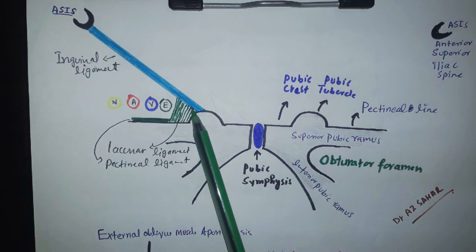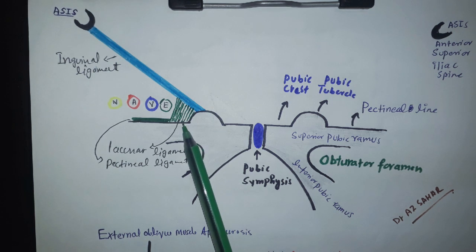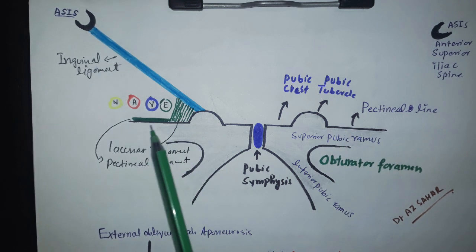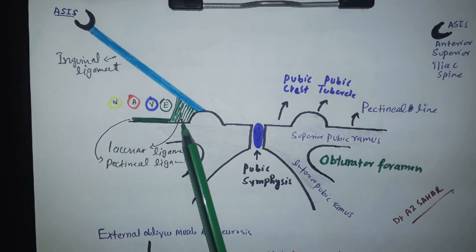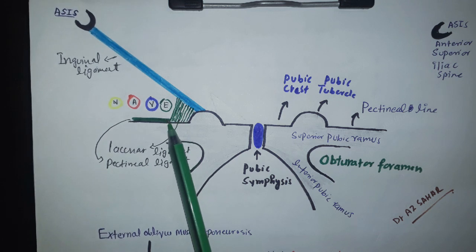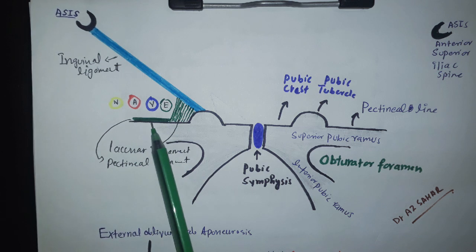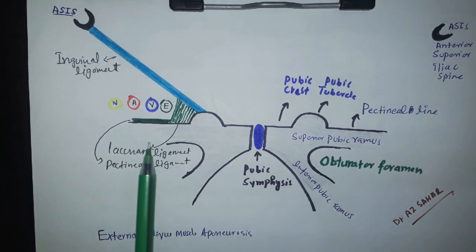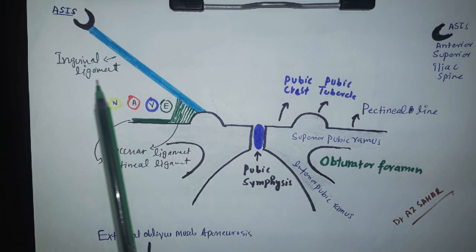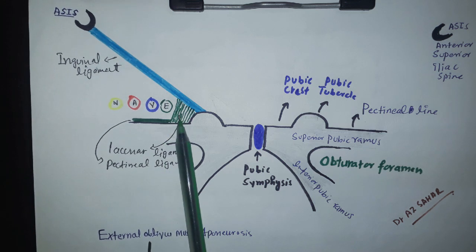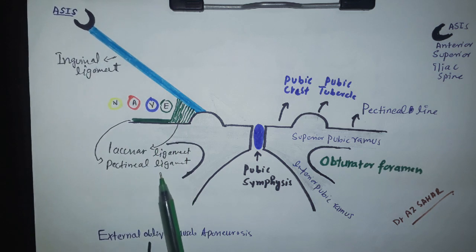Now, fibers from the inguinal ligament move backward and attach with the pectineal line. You can see here — this is the pectineal line — and attached with the pectineal line, this is called the lacunar ligament. Then fibers from the lacunar ligament laterally extend over the pectineal line, and these are called the pectineal ligament. So the inguinal ligament forms the lacunar ligament, and the lacunar ligament forms the pectineal ligament.